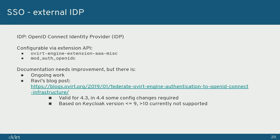The more interesting option for this presentation is the external identity provider integration, which is also quite easy to add. Unfortunately the documentation is not as good as for the previous option, but there is ongoing work to improve it. For now, there is a blog post written by Ravi Nori, one of the core developers of the authentication, authorization, and single sign-on options in oVirt engine — big kudos to him.